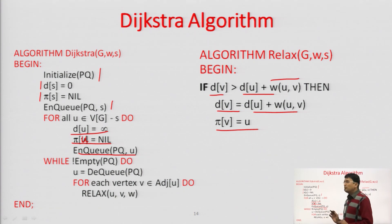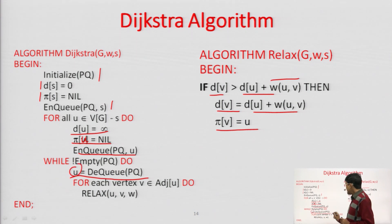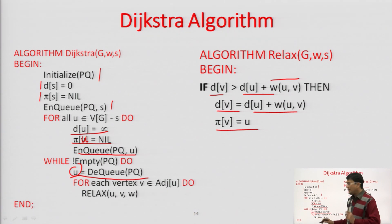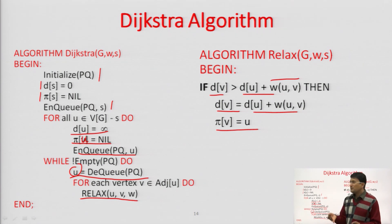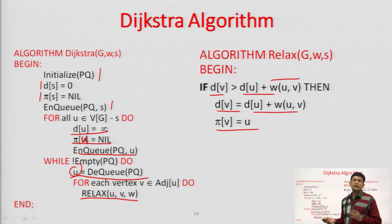Then, as long as our priority queue is not empty — as long as we have vertices in the priority queue — we delete the smallest vertex from the priority queue. That vertex is u. For all vertices adjacent to u, we call the relaxation algorithm to check if we can make updates — if we can, we update. So each time we delete one vertex, make updates through it, then delete again and update again. This process continues until the priority queue is empty.